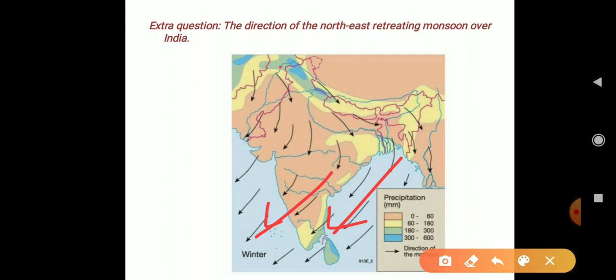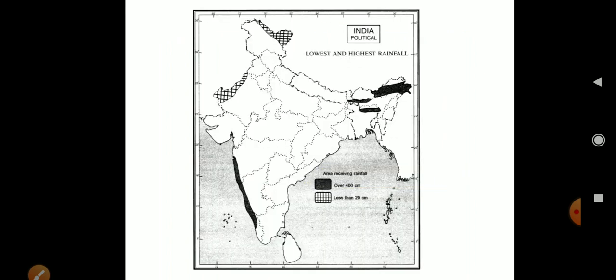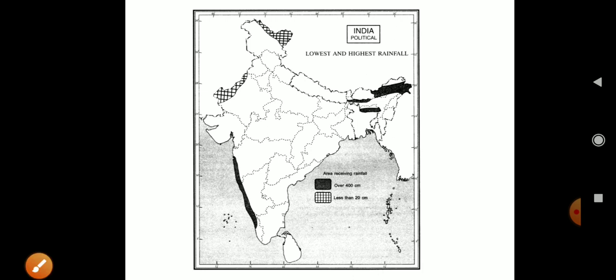The direction of the retreating monsoon — the Karnataka region is labeled on the map. Label the areas carefully. Thank you for watching, God bless you every day.